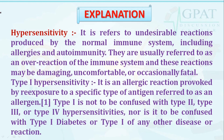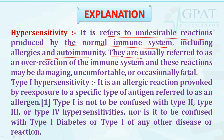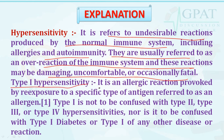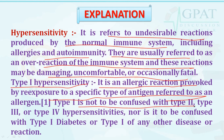Hypersensitivity refers to undesirable reactions produced by the normal immune system, including allergies, disease, and autoimmunity. These are usually referred to as overreactions of the immune system and may be damaging, uncomfortable, or occasionally fatal. Type 1 hypersensitivity is an allergic reaction provoked by exposure to a specific type of antigen referred to as an allergen. Type 1 is not to be confused with type 2, type 3, or type 4 hypersensitivity, nor with type 1 diabetes.